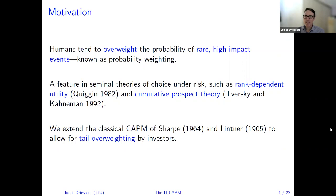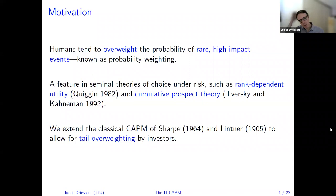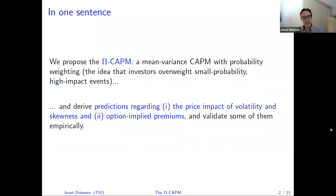Two of the several theories that incorporate this probability weighting are rank-dependent utility and cumulative prospect theory. There are several applications of probability weighting in finance. What we do in the paper is something that is, in a sense, very simple. We take the most standard asset pricing model — the classical CAPM — and we add probability weighting to it in a very simple way. It will only involve one additional parameter. The model will allow for tail-overweighting, and we call this model the PI CAPM. This model generates a lot of predictions on the pricing of assets and also on options written on assets.